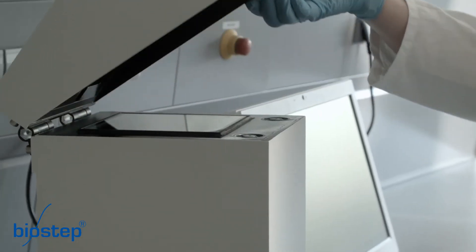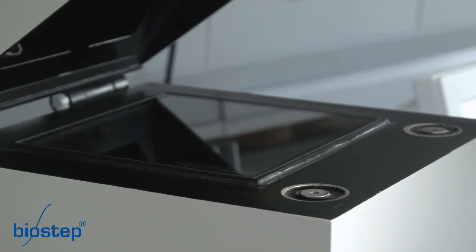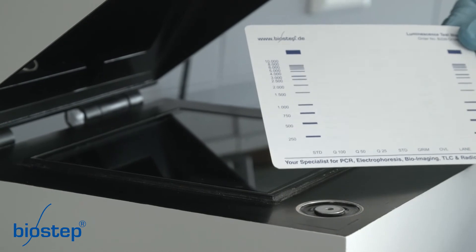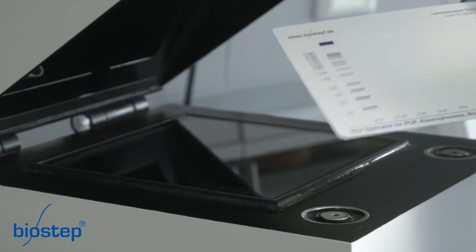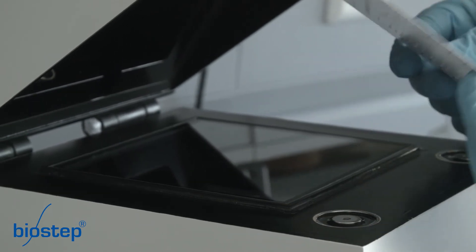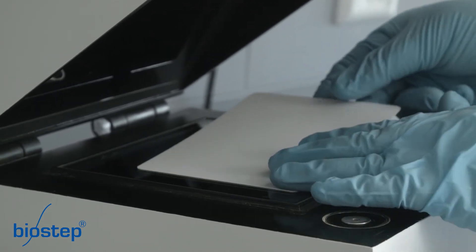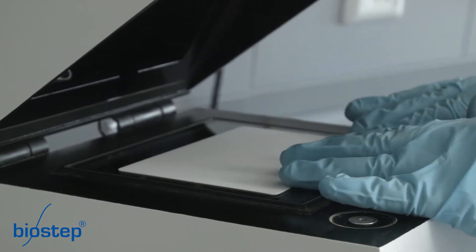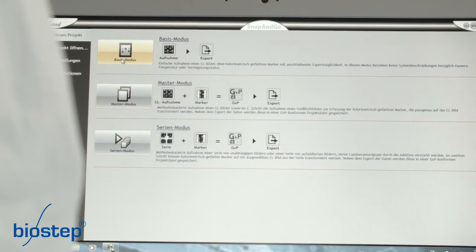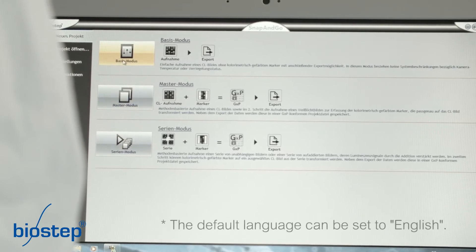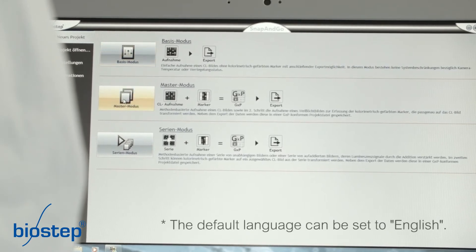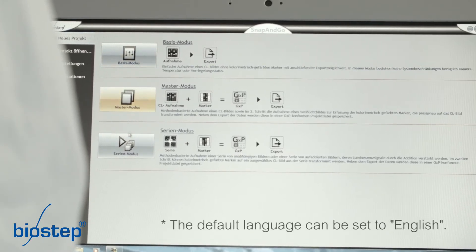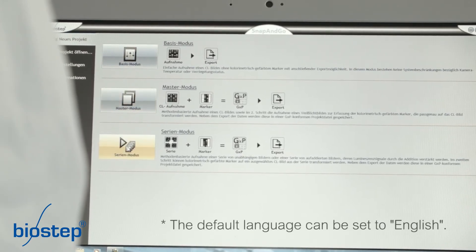This is a test blot for demonstrating the function of Kelvin. The software Snap&Go offers three working modes: basic mode, master mode and serial mode.